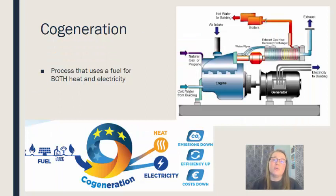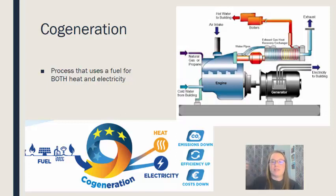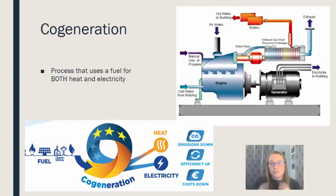Another important process is cogeneration — using a fuel for both heat and electricity simultaneously. Making electricity involves generating heat to turn a turbine to spin a generator. It makes sense to also capture the excess heat to, for example, heat a building. When a fuel is used for two different purposes like this, that is called cogeneration — co meaning working together, generating both heat and electricity.